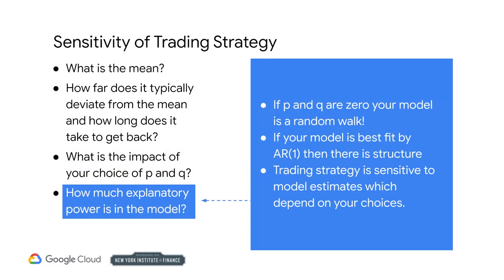The results of the model also tell you how much explanatory power there is in the model itself. What if your best fit is an ARMA(0,0)? Then you have a random walk, which tells you that the market is efficient. What if your model is best fit by an AR(1)? Then there is structure. However, your choices of data, P, D, Q, ARIMA form, estimation method, and software affect the outcomes. Some combinations of these choices may show ARMA(0,0) is better; others may show AR(1) is better. These two models result in two very different trading strategies.